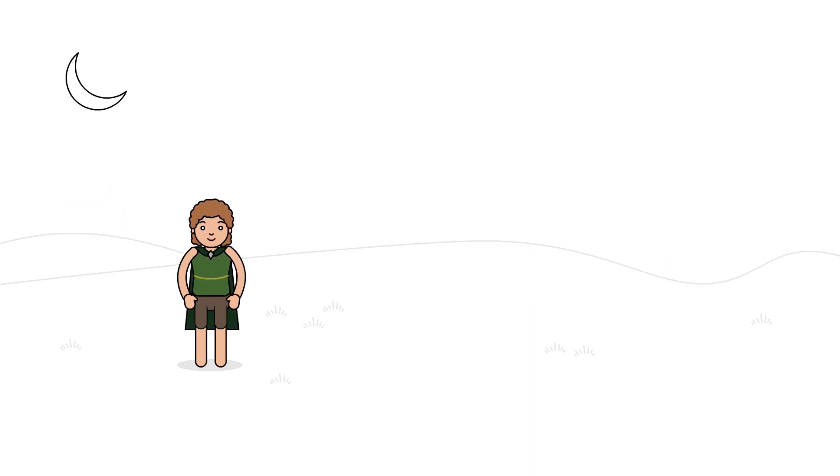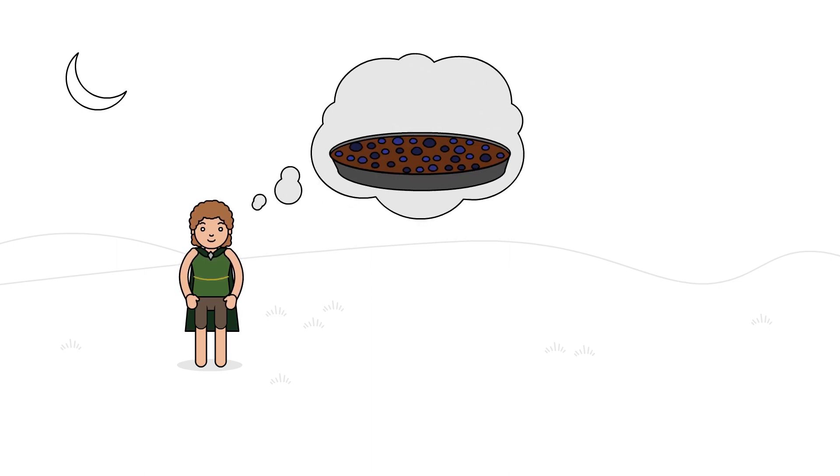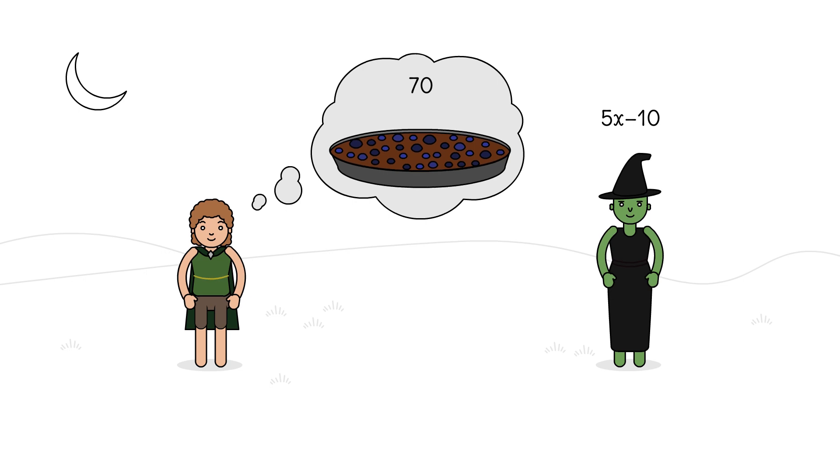That night, Devon is restless and walks out into the moonlight. He has a vision of a giant blueberry tart made from 70 blueberries and a different wizard who uses the magical rule 5x minus 10.